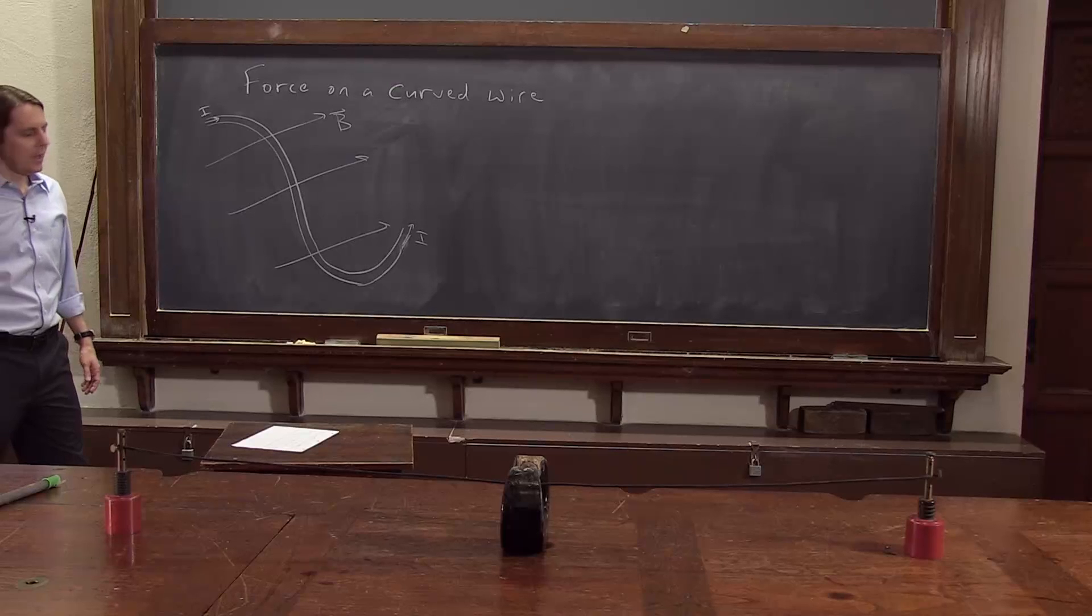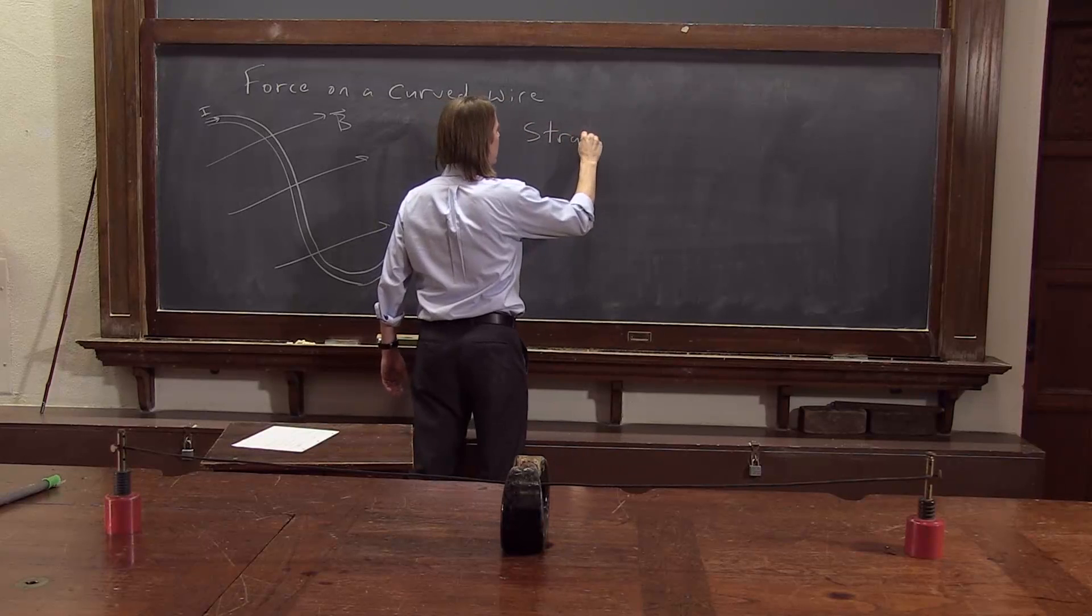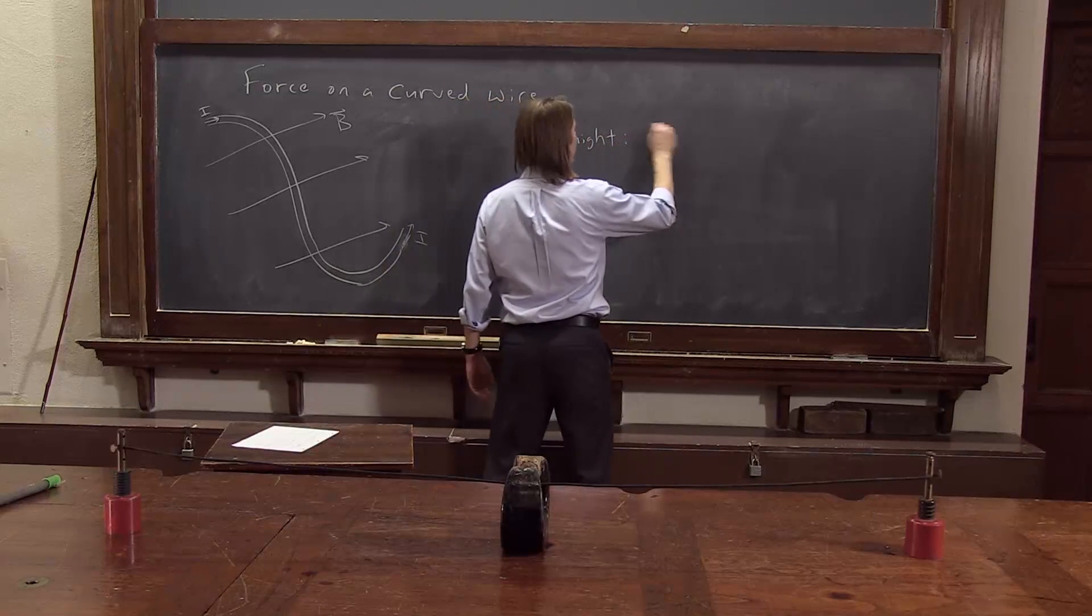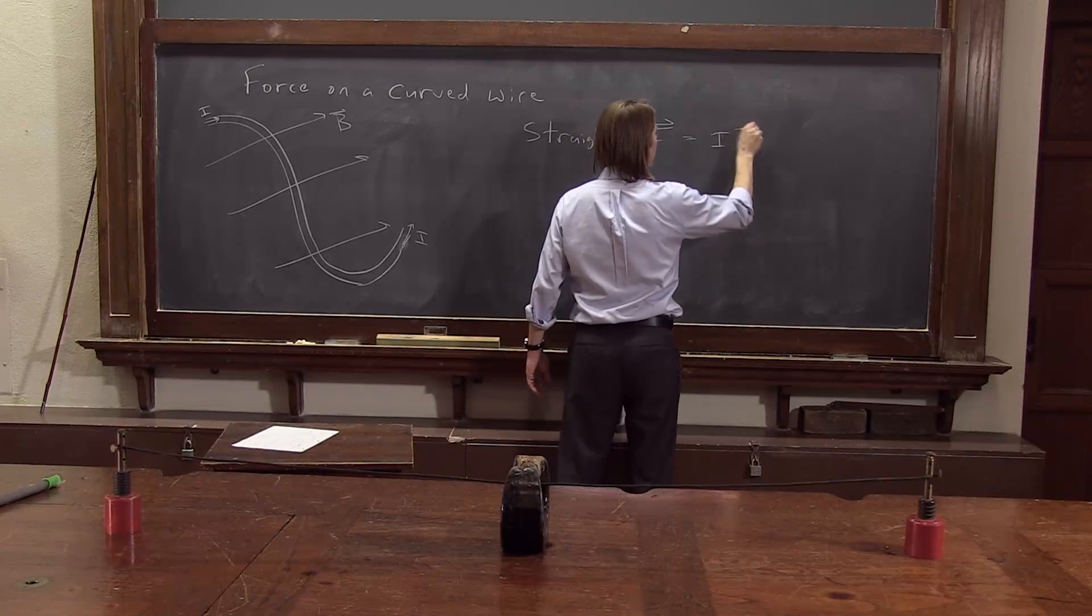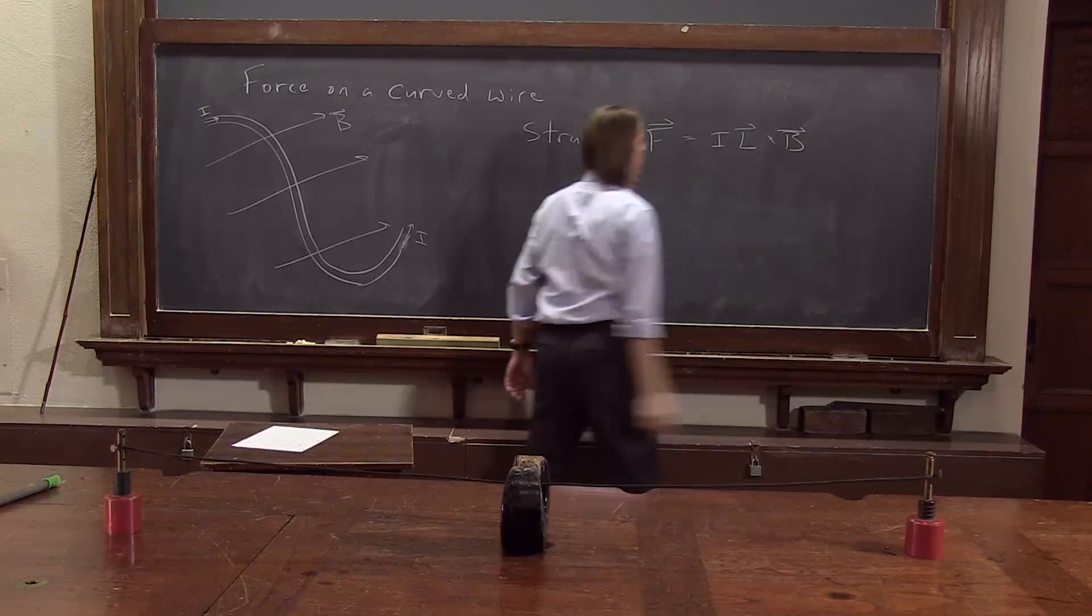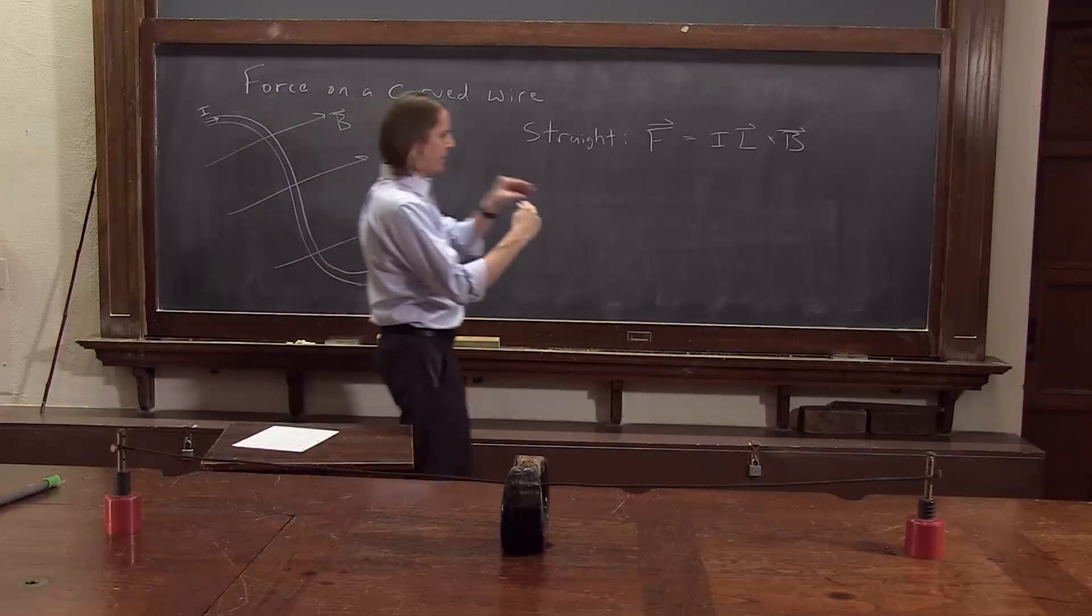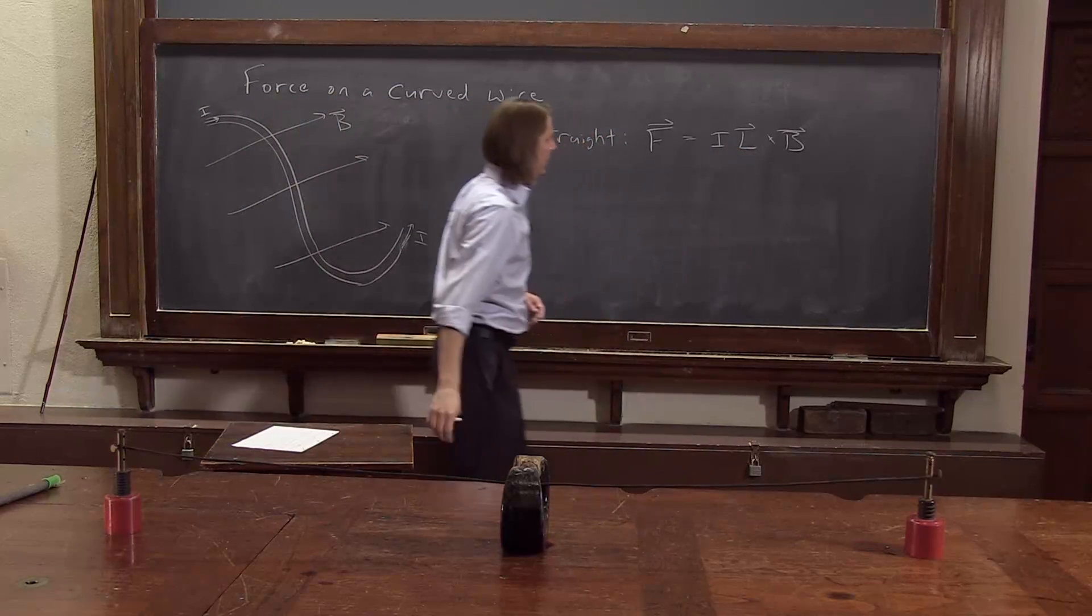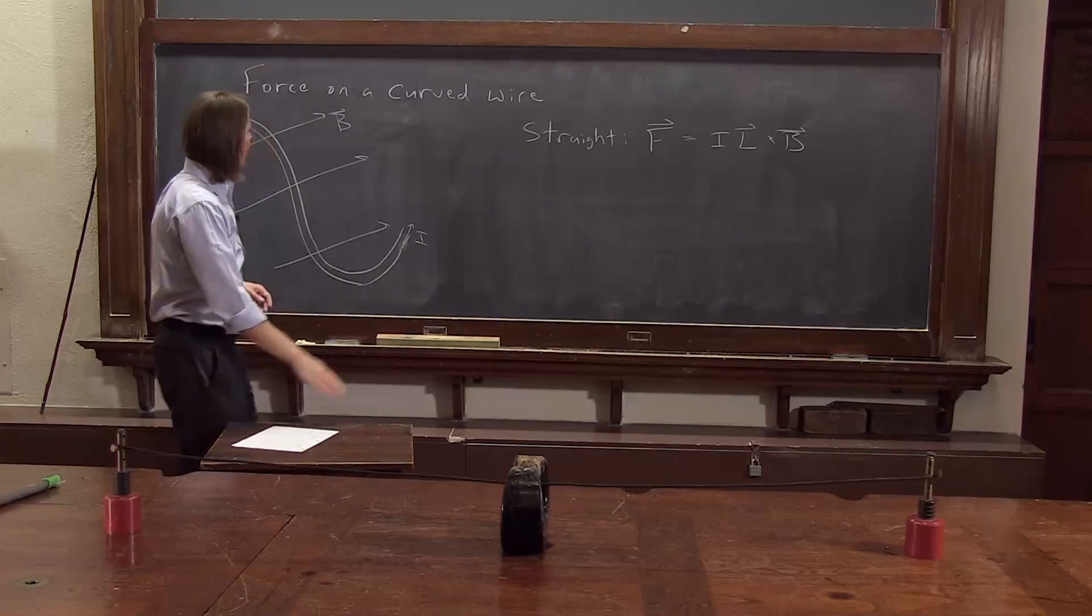All right. If this wire were straight, we would have F on the wire equals IL cross B, like we just talked about. If it were a straight segment, current gives you the direction. The length of the straight segment gives you the magnitude of L. We don't have that. We have a curved wire.